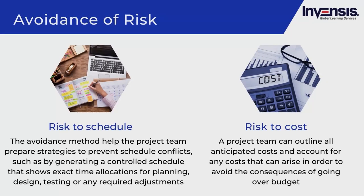For avoidance of schedule risk, by recognizing potential concerns that might impact the project's timing, it is possible to avoid schedule impacts. Important deadlines, due dates, and final delivery dates can be affected by risks such as being too optimistic about a project's duration. The avoidance method can help the project team prepare strategies, such as generating a controlled schedule showing exact time allocations for planning, design, testing, and retesting.